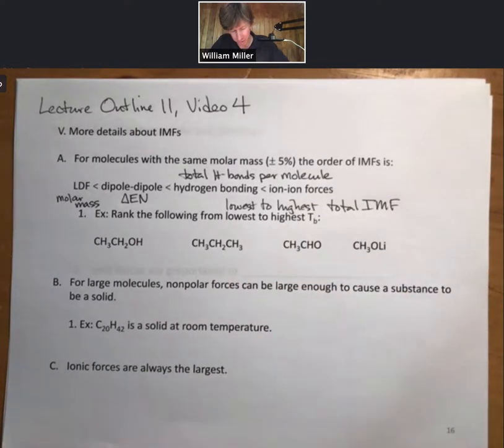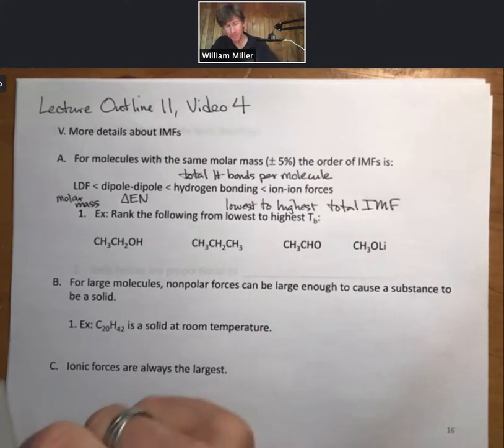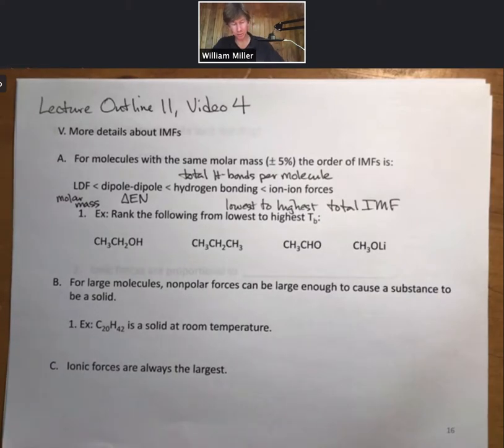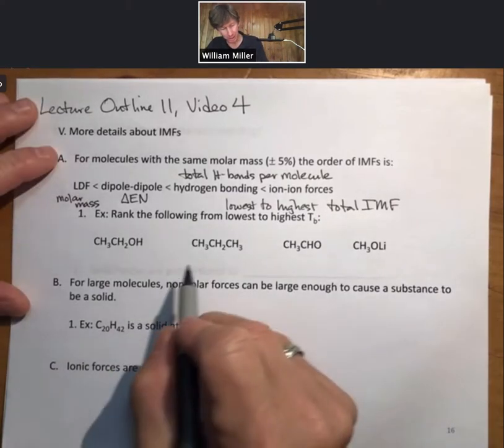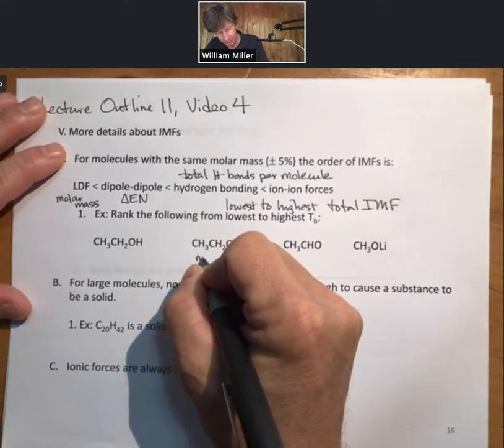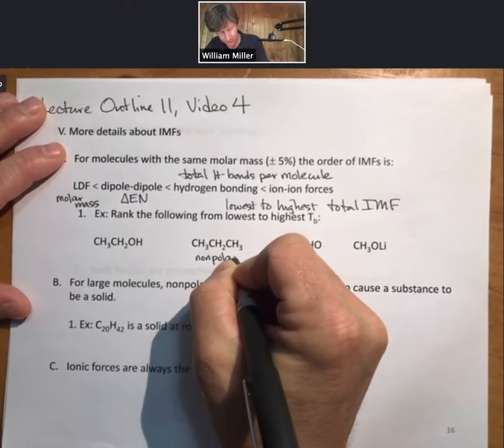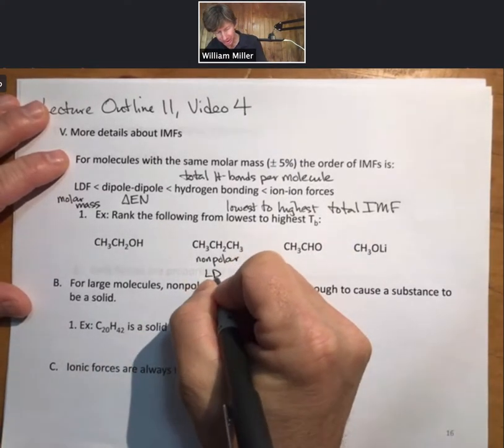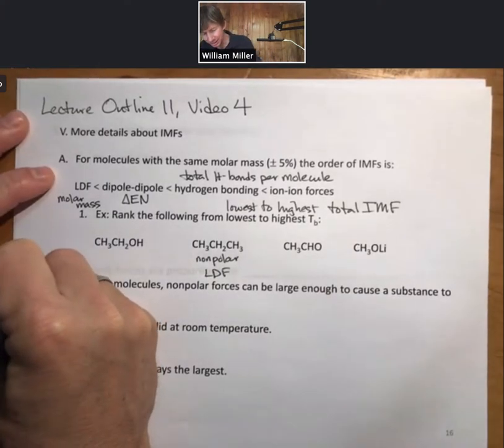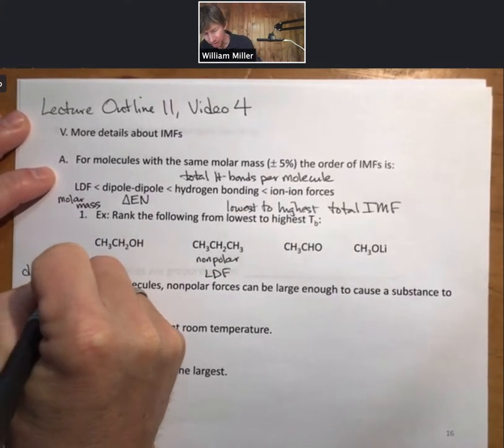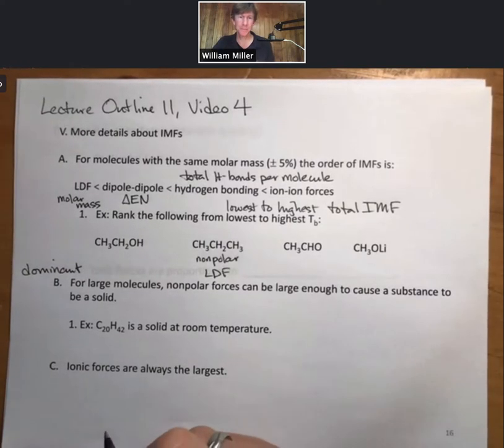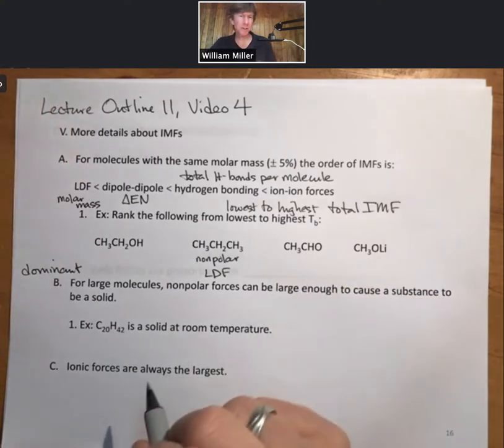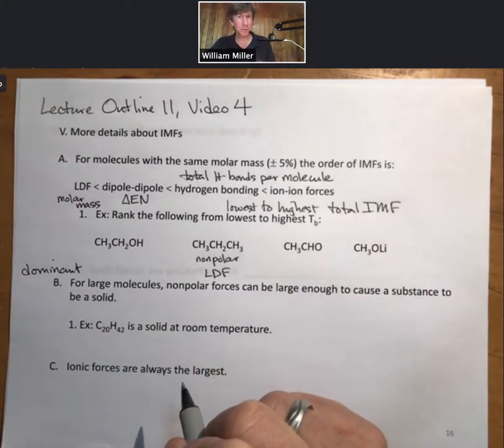A typical problem: rank the following from lowest to highest boiling points. Our analysis goes something like this. Nonpolar or anything that contains just carbons and hydrogens, only LDF and LDF as its dominant or largest IMF. Here we have CH3CHO.